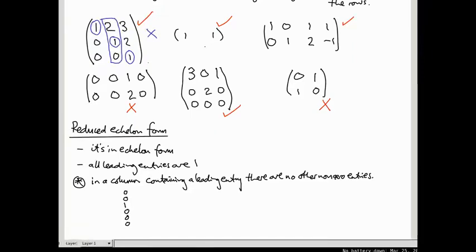The second guy, it's in echelon form. The leading entry is one. And in that column, there are no other non-zero entries. There are no other entries full stop. So that is in reduced echelon form.